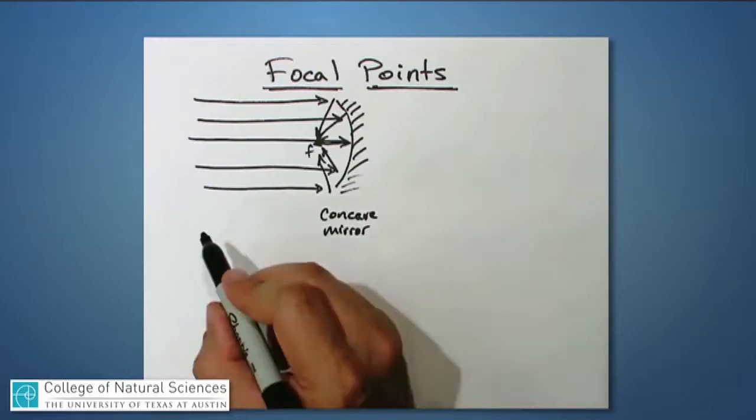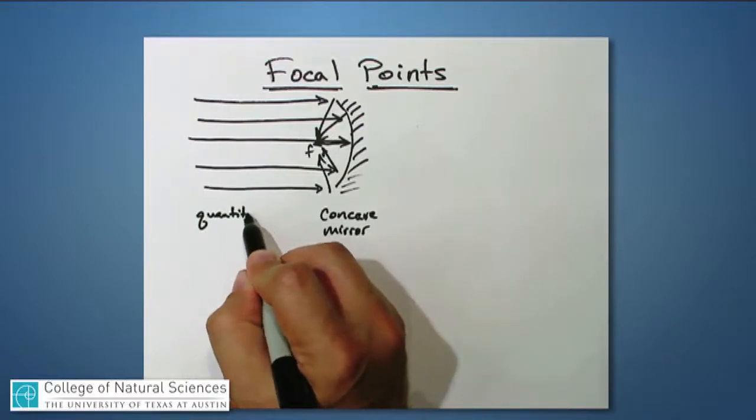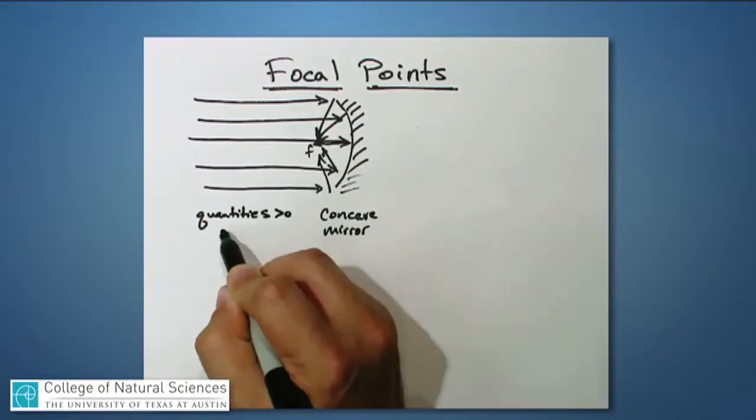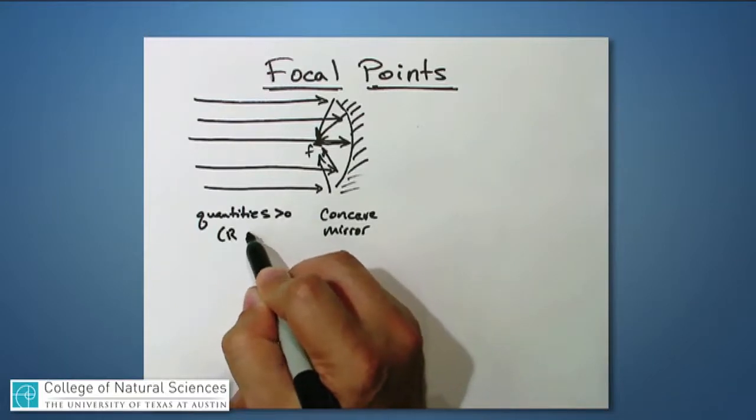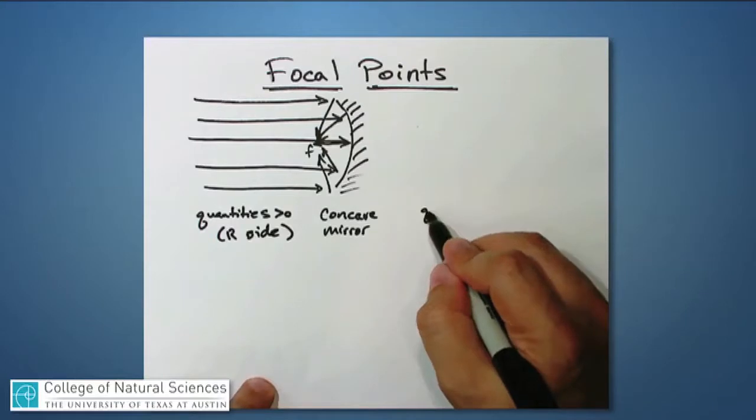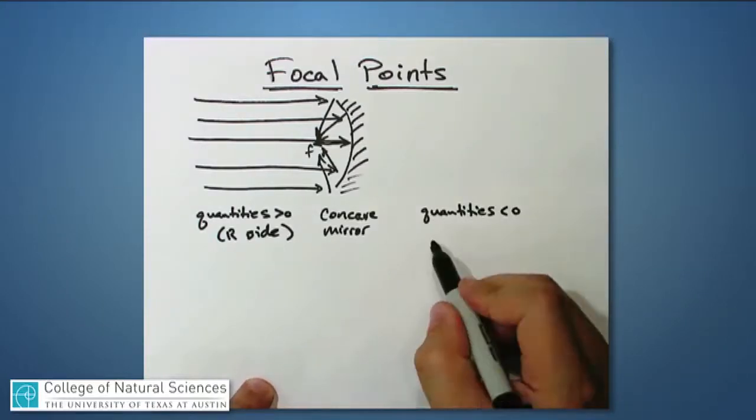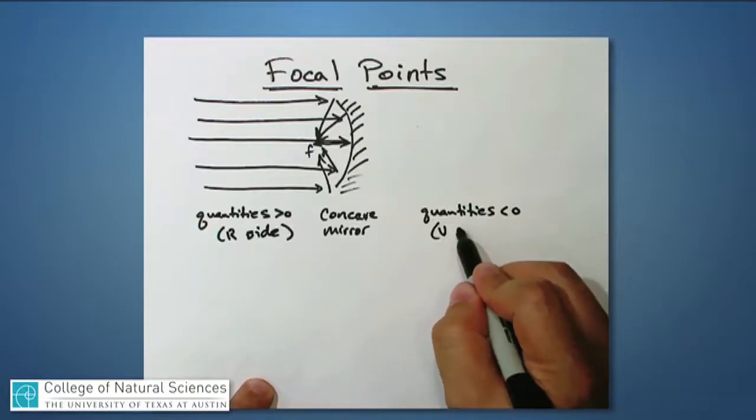And because we define all quantities over here, this being the real side of the mirror, and over here, quantities are all negative. In other words, this is the so-called V side of the mirror.